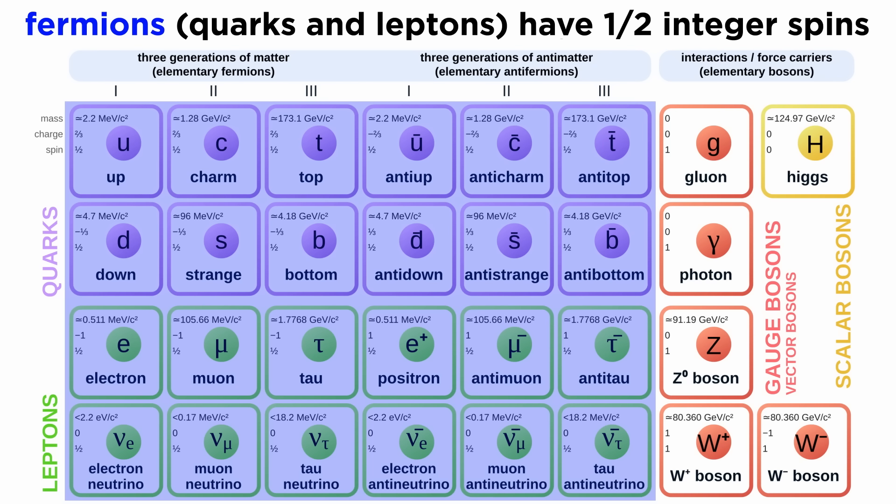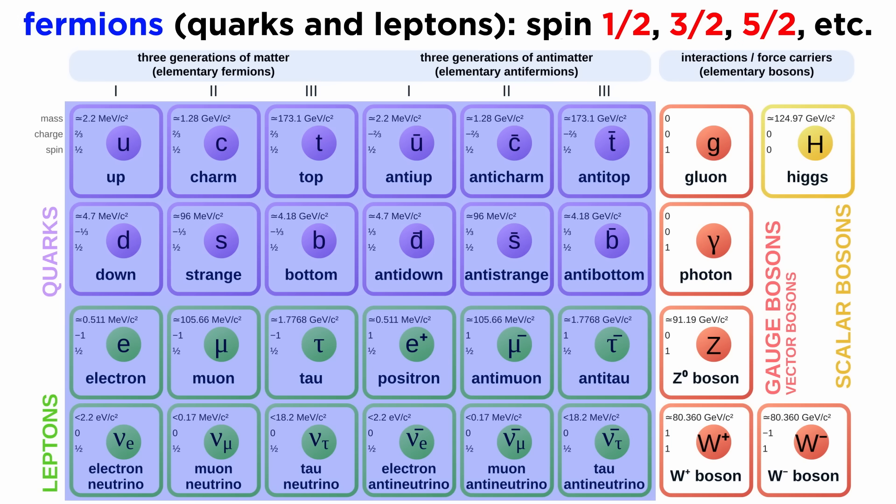Another thing to note about the first two groups of particles in the standard model, the quarks and the leptons, is that they have half-integer spins. These therefore qualify as fermions, as fermions are particles that can have spins of any half-integer value, like one-half, three-halves, five-halves, and so forth.